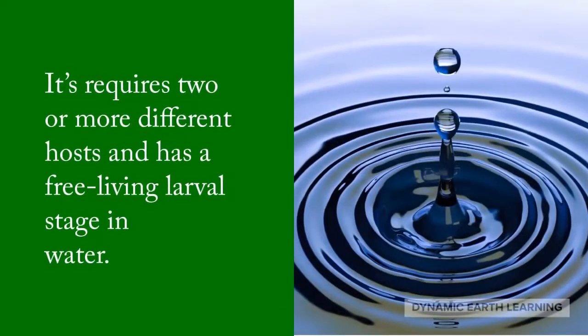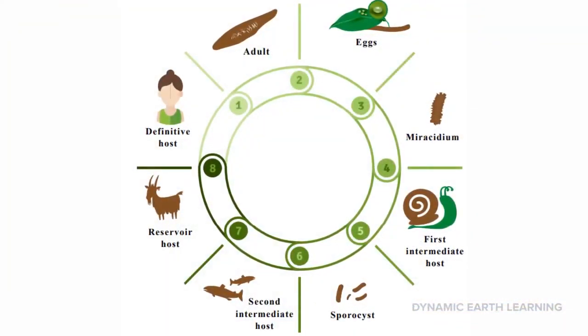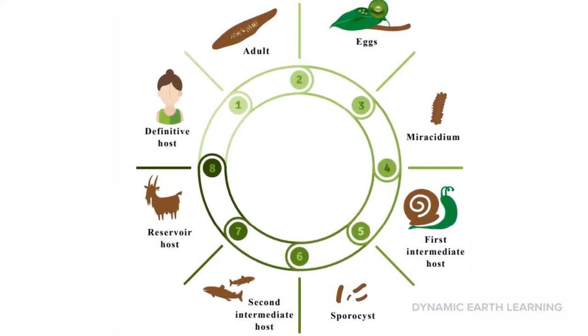The liver fluke life cycle is complex. First it infects the plants that are eaten by fish. After the fish have eaten the plants, the liver fluke lays eggs inside of the fish.